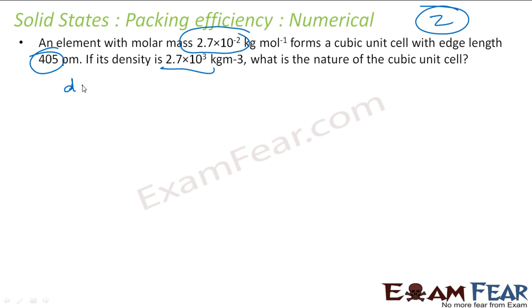So we have this formula: Density = MZ / (Na × A³). We have to find Z. Z = D × Na × A³ / M. So let us put the values in the formula. Z = density is given as 2.7 × 10³ kg/m³. Everything is in kg units. So 2.7 × 10³ kg/m³ × Na, which is 6.023 × 10^23 atoms per mole.